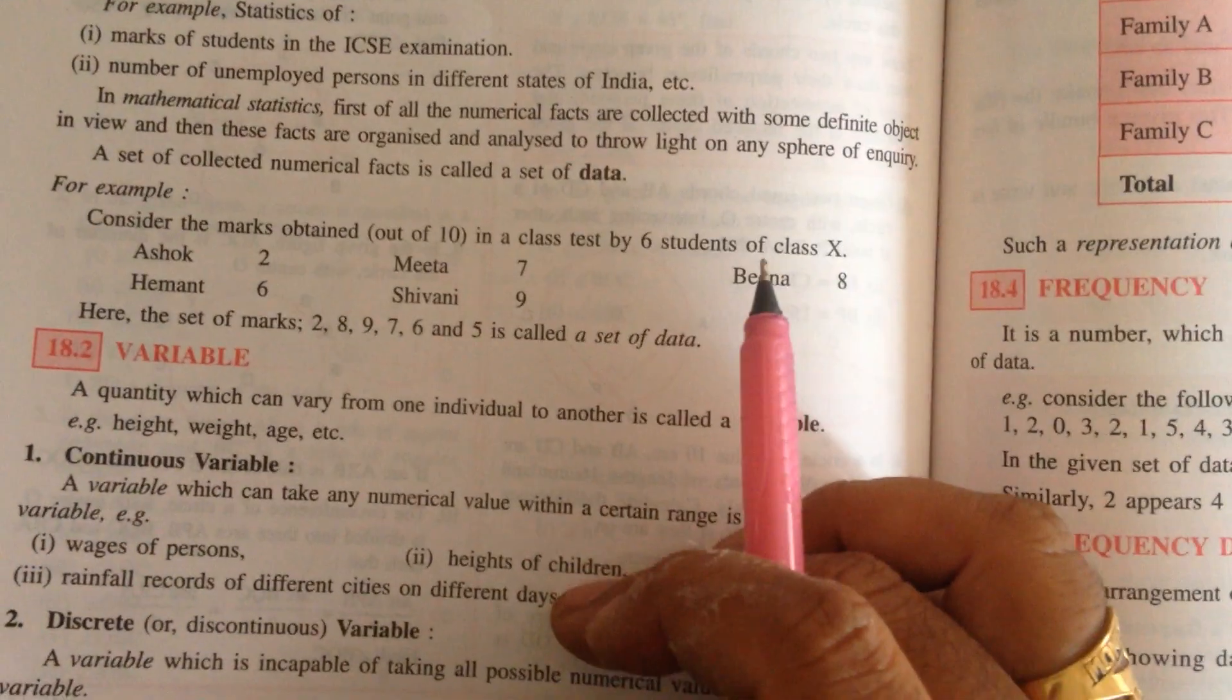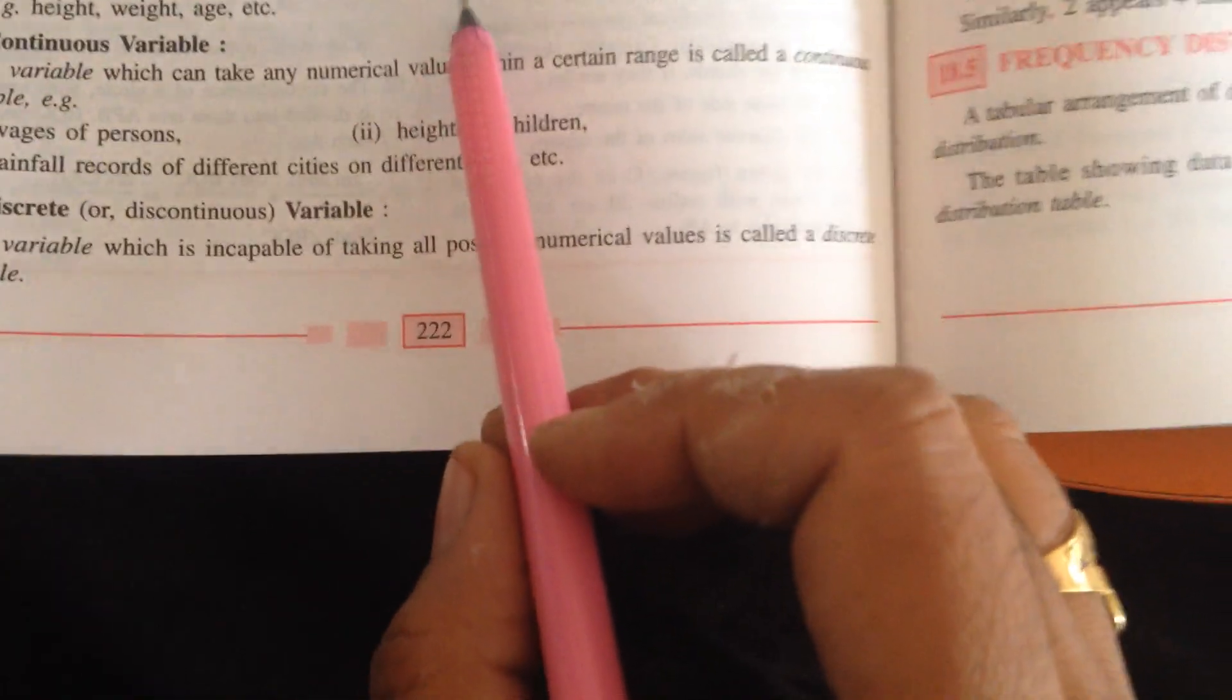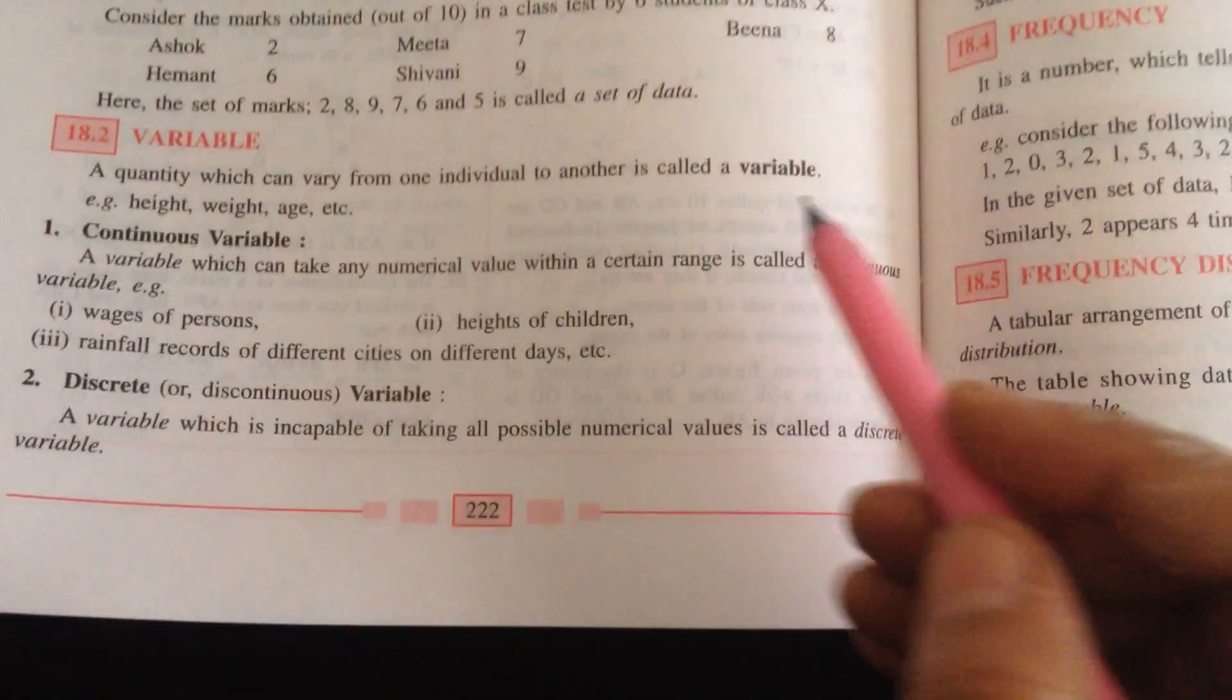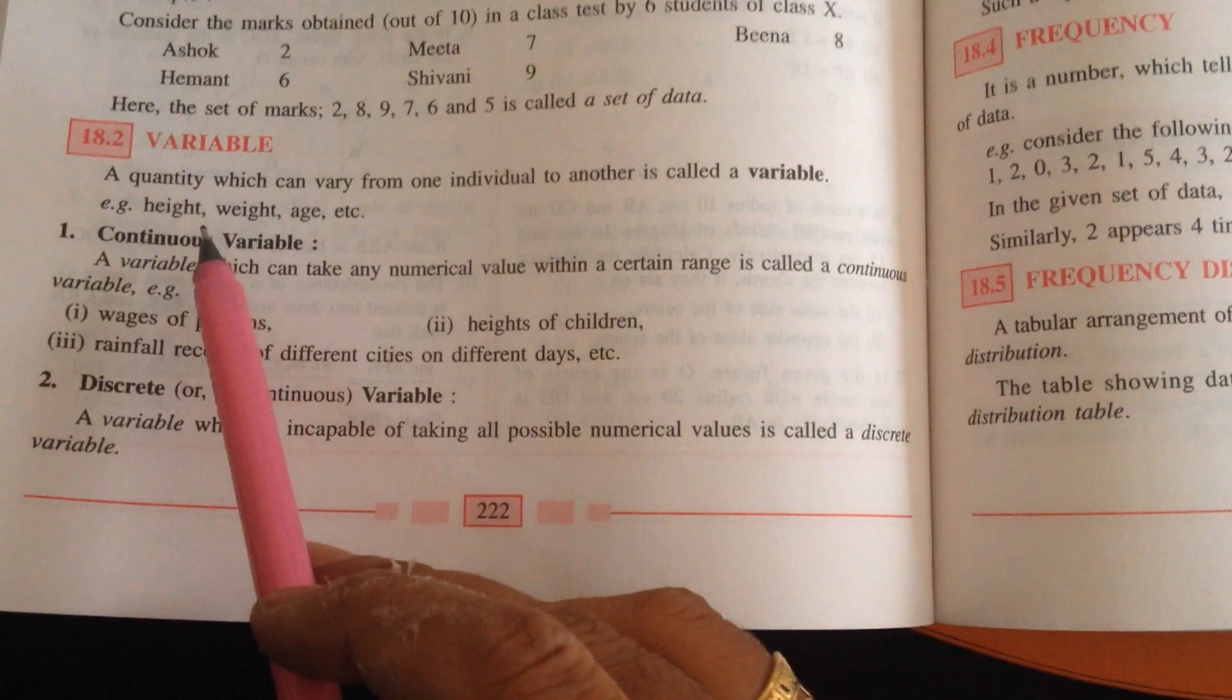So that conclusion may be formed from the given data. That is known as statistics. A quantity which can vary from one individual to another is called a variable. The quantity that keeps changing, that is not fixed, that is known as variable. For example, height, weight, age, etc.